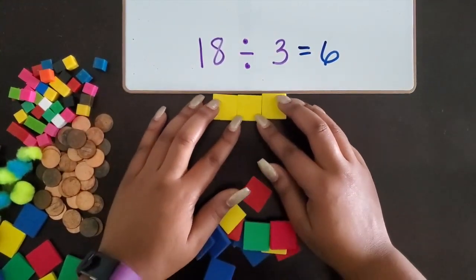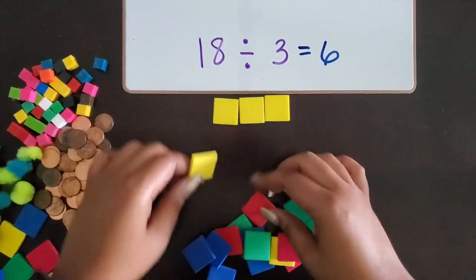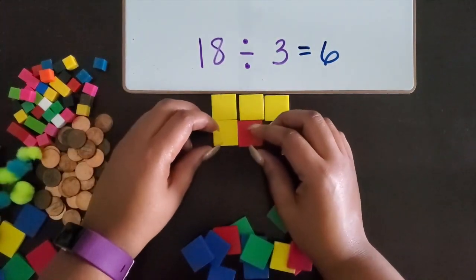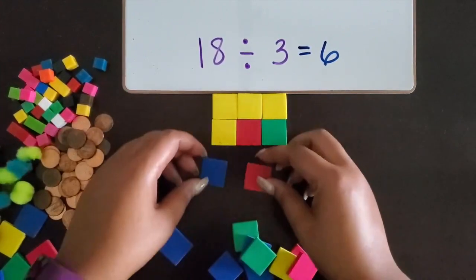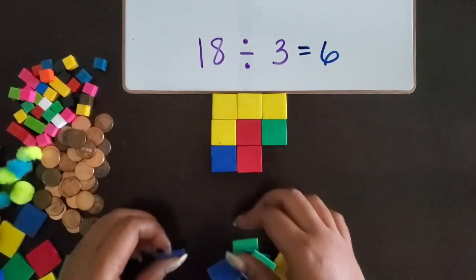So three is the width. So now I'm going to build the next row so I can figure out what the length of the area is.